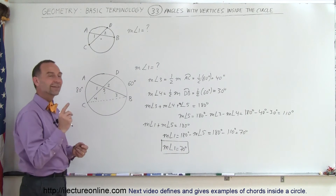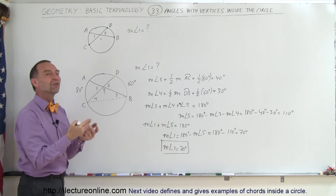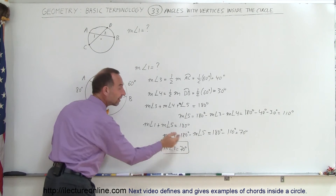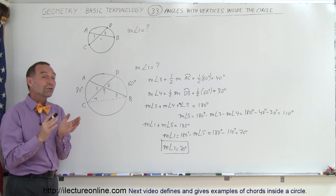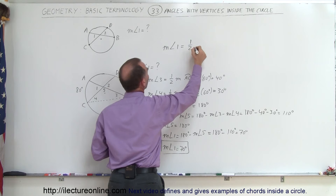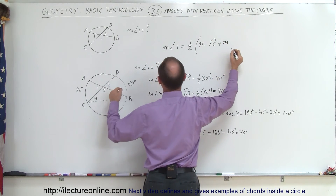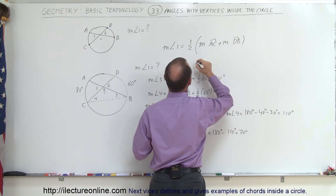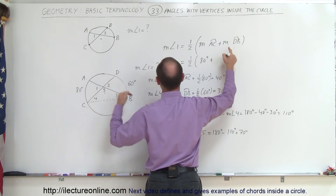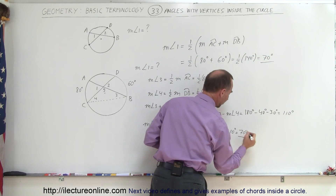Notice that 70 degrees is exactly the average of arc B to D and arc A to C. If we add 80 plus 60, that's 140, and divide by 2, we get 70. So we can say the measure of angle 1 equals one-half the sum of the measure of arc A to C plus the measure of arc D to B. That's one-half of 80 plus 60 degrees, which is one-half of 140 degrees, equaling 70 degrees — the same answer.